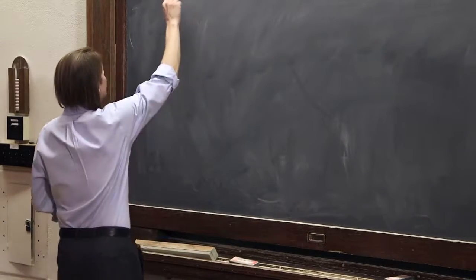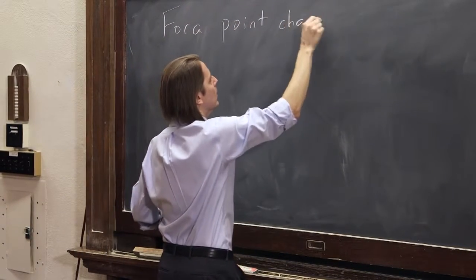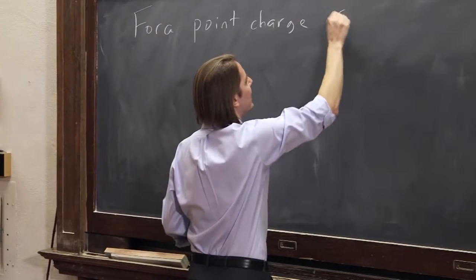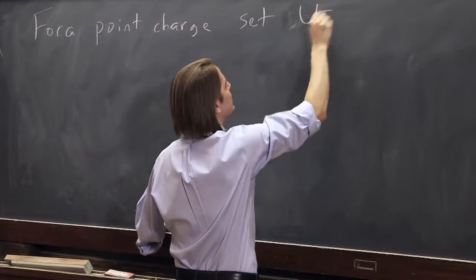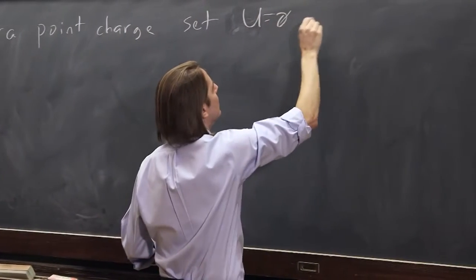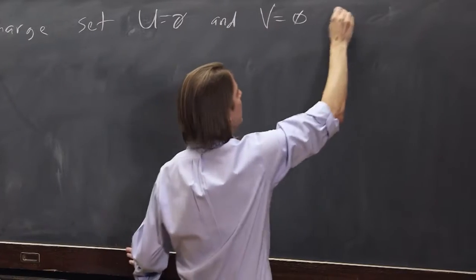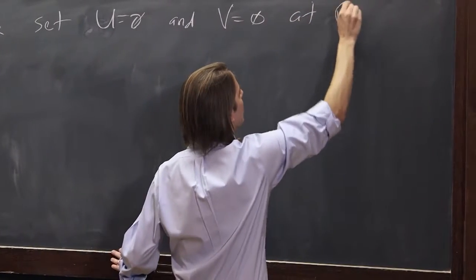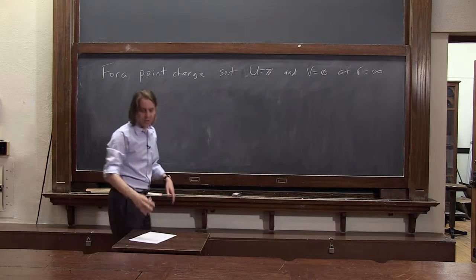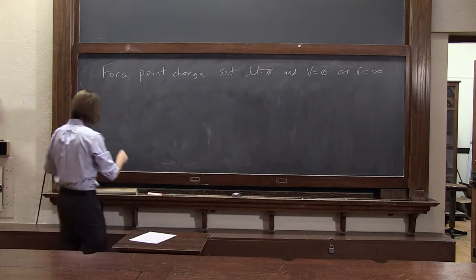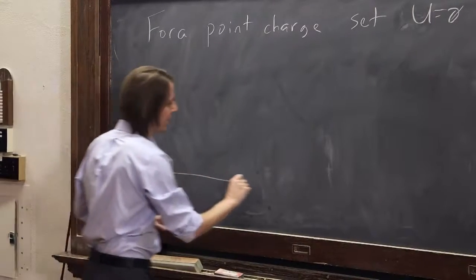So for a point charge, let's set the energy, potential energy, equal to zero. And therefore, the potential equal to zero at infinity, at R equals infinity. Now let's see what this looks like mathematically. So we're going to have a charge, plus Q, and we're looking on this axis.